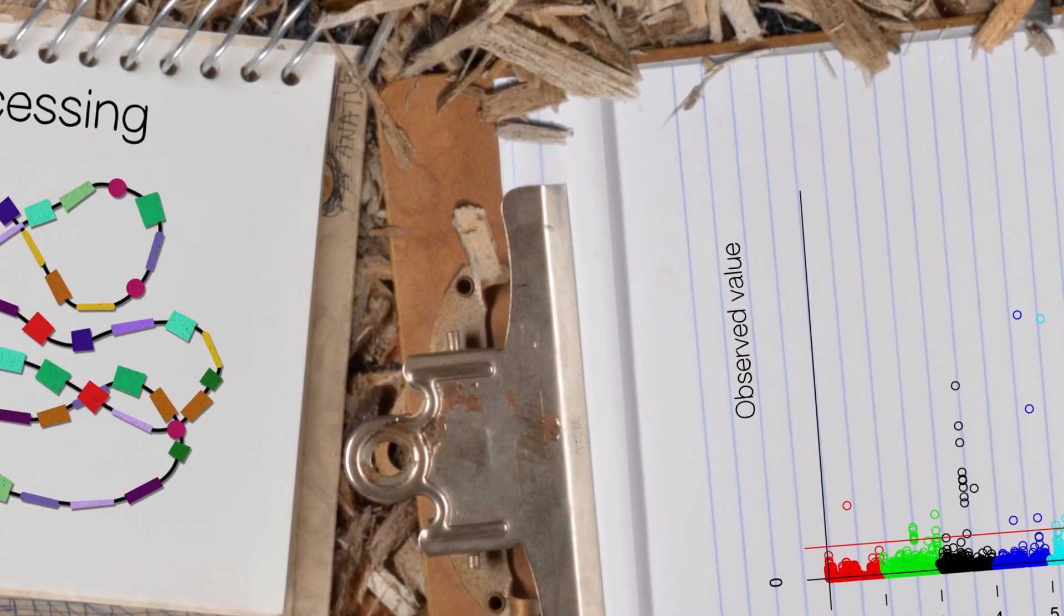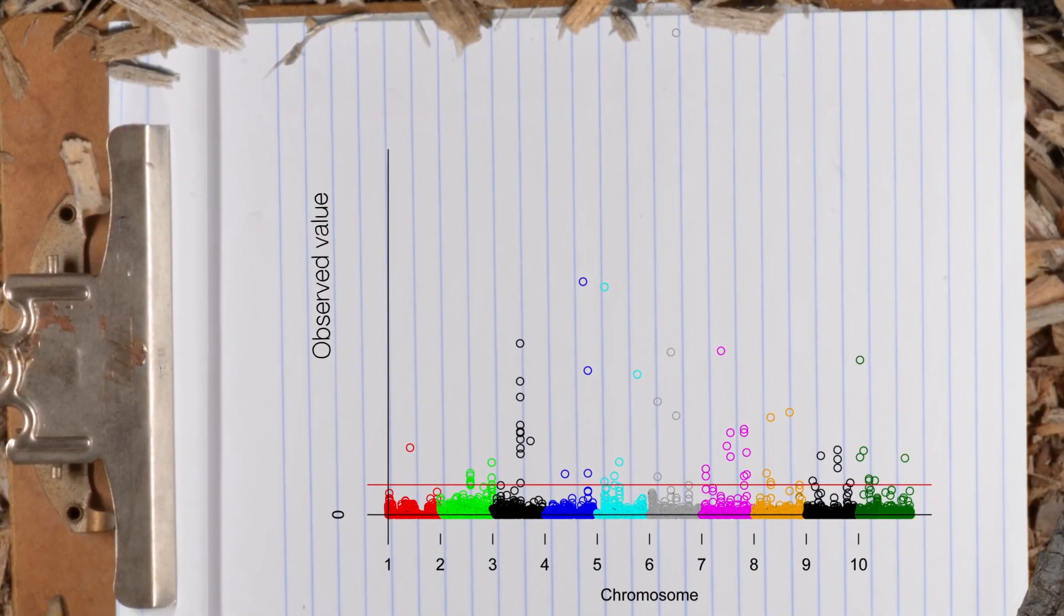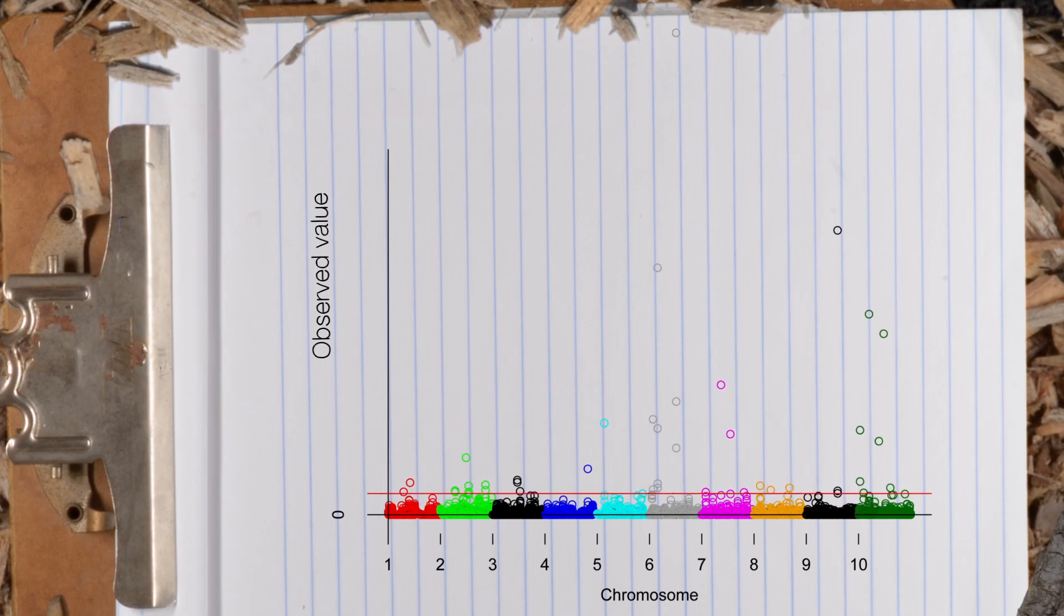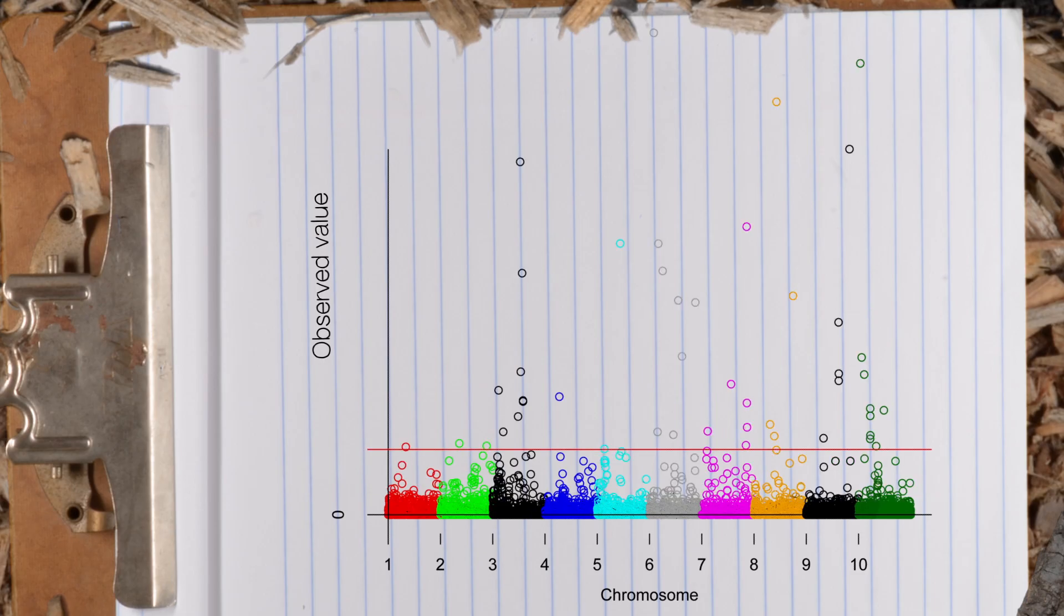So this crazy figure is actually called a Manhattan plot, because it kind of looks like a skyline, and each dot represents one gene, and the higher the dot is in the plot, the more different it is between city and country mice. The ones at the tips of the skyscrapers are the most different, especially those above the red line.